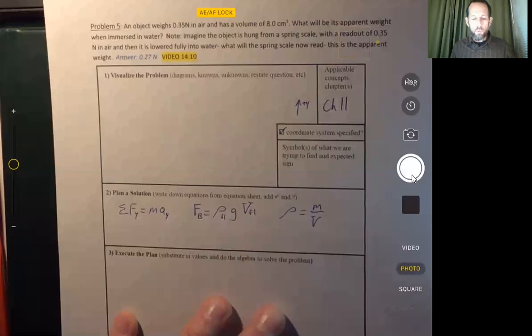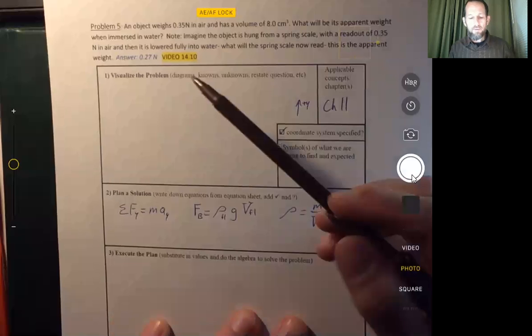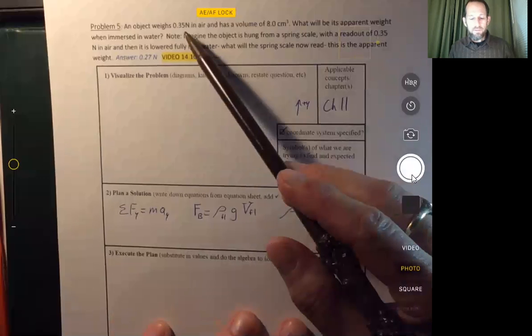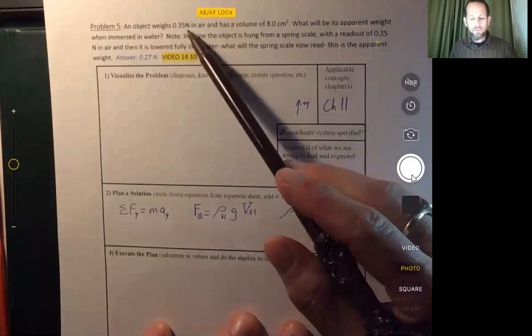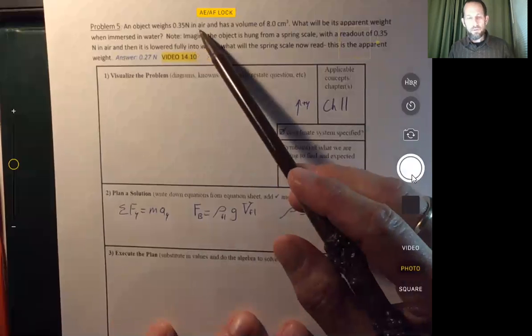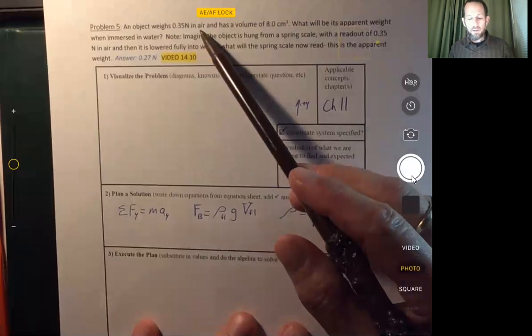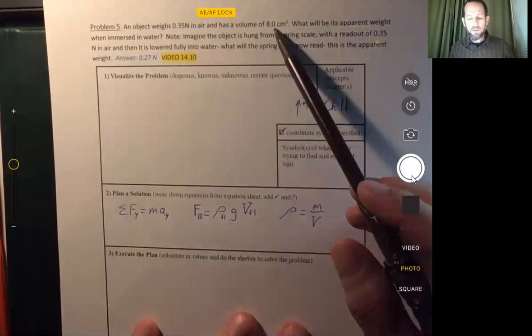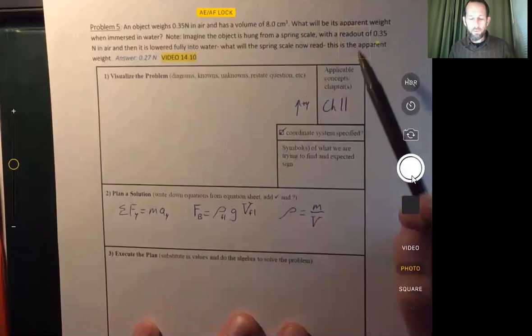Hello everyone. We're going to take a look at this problem where we have an object that weighs 0.35 newtons in air, which is kind of a strange way to put that, has a volume of eight cubic centimeters, and we're supposed to find its apparent weight.